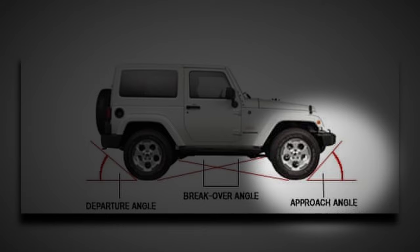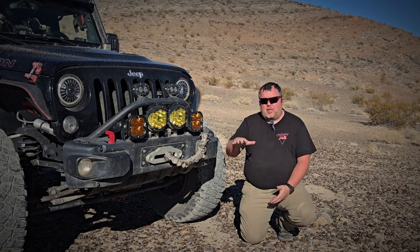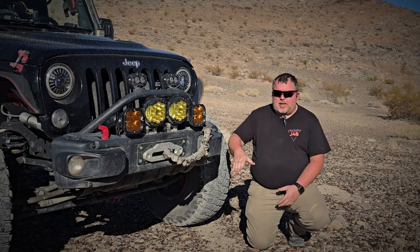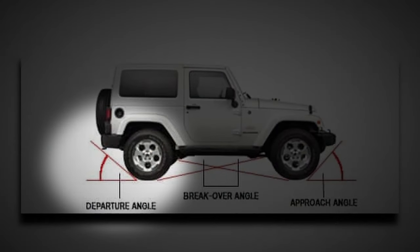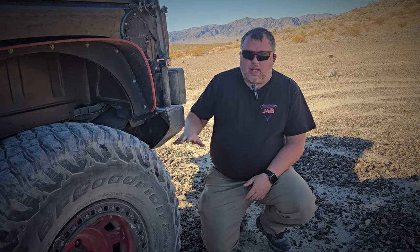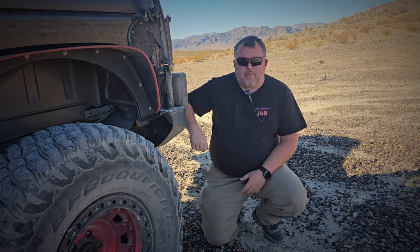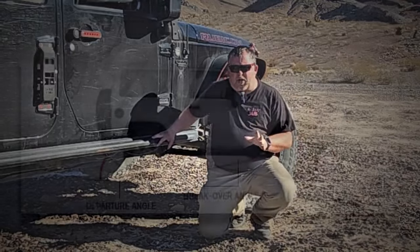Approach angle refers to the tallest or highest object that you can conquer by getting your tires on it first before it hits your bumper or any of your vital components. Departure angle is the logical opposite — after climbing over an object, it's the tallest object you can clear off your rear tires before it smacks your rear bumper.